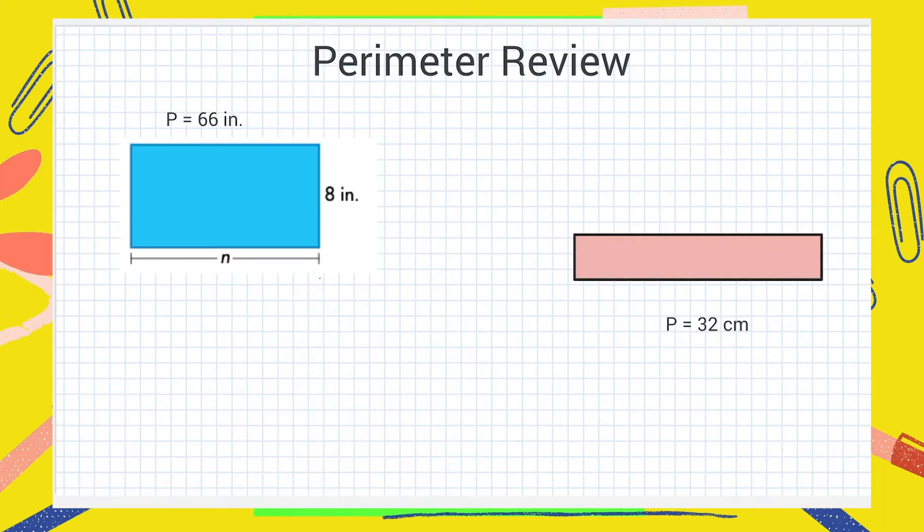Let's review perimeter. Let's take a look at this first blue rectangle. Remember from last week, the perimeter is the total distance around an object or the sum of all of its sides. Let's take a look at this first problem.